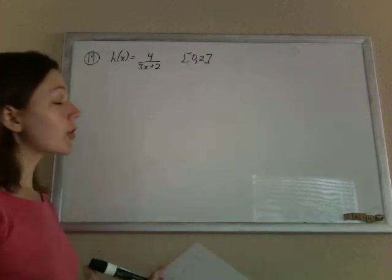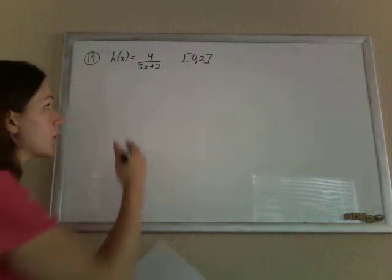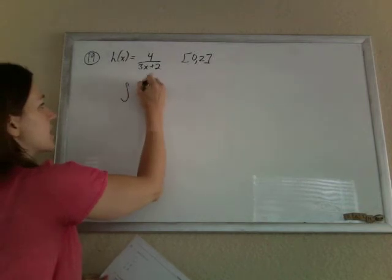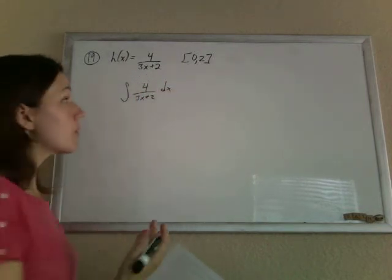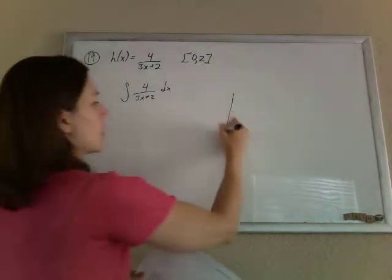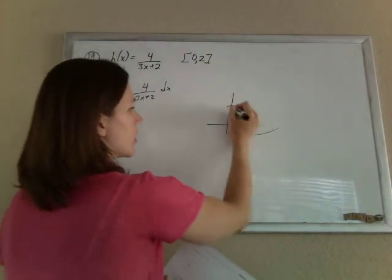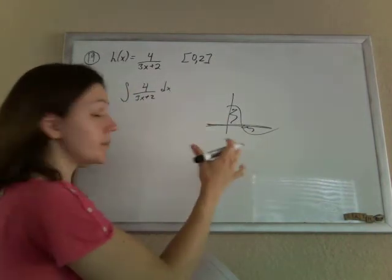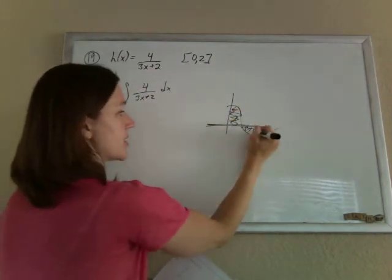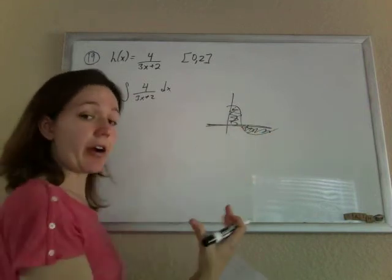Alright, so they want us to find the area under the curve. We know if we take the integral of the function, we'll get the signed area under the curve. The only thing we have to watch out for is to make sure this thing never crosses the x-axis in our interval. Otherwise we would have to take care of a positive region and a negative region to get the area.